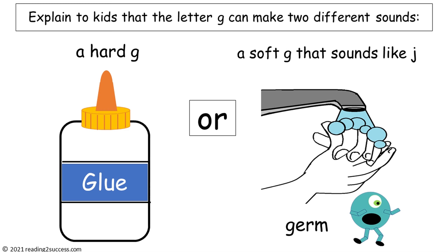Welcome, parents, to How to Teach Kids the Soft G Sound. Explain to kids that the letter G makes two different sounds: a hard G as in glue, or a soft G that sounds like J, as in germ.